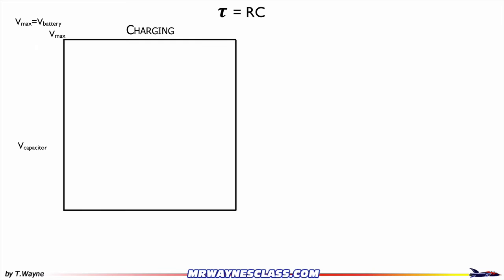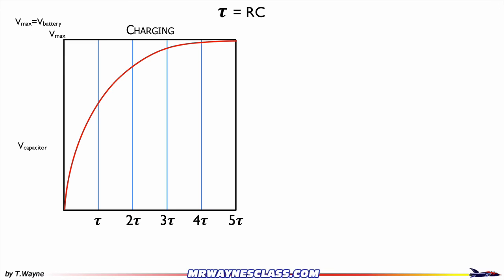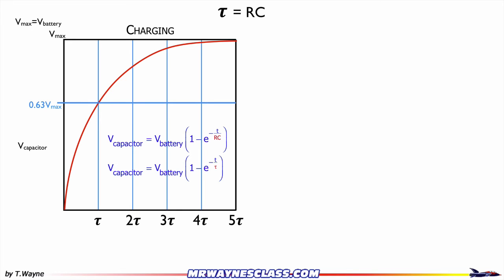Let's take one more look at these time constants. Here's a graph of the potential difference across the capacitor, with the x-axis in time constants. The equation is: V_C equals the battery's voltage times (1 minus e to the negative t over RC). After one time constant: 63%. After two time constants: 87%. After three time constants: 95%. After four time constants: 99%. After five time constants, we consider the capacitor to be completely charged — although theoretically it would take infinite time to reach maximum voltage.